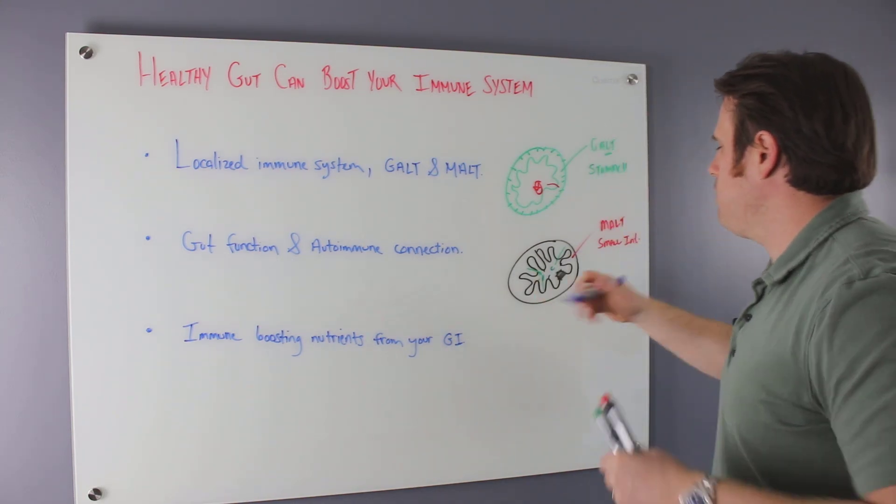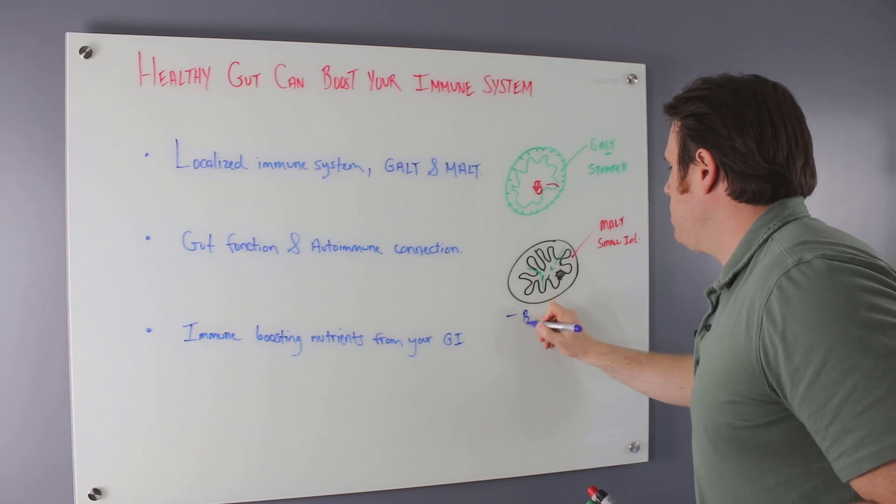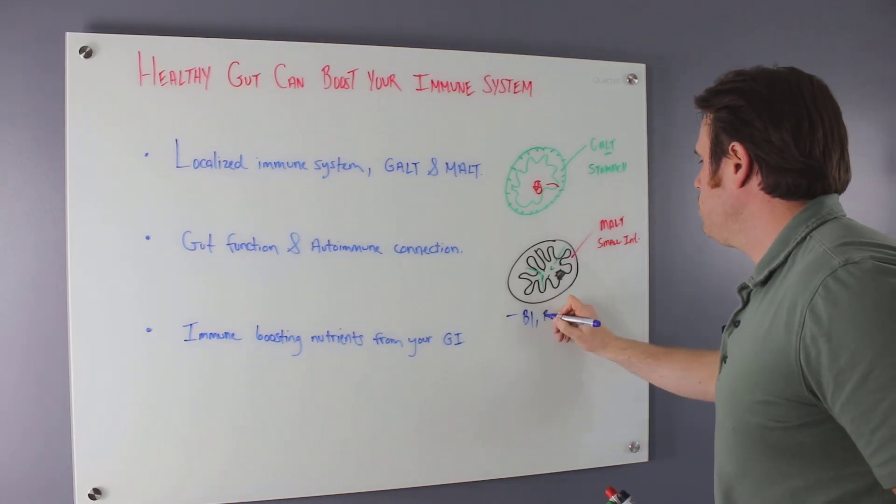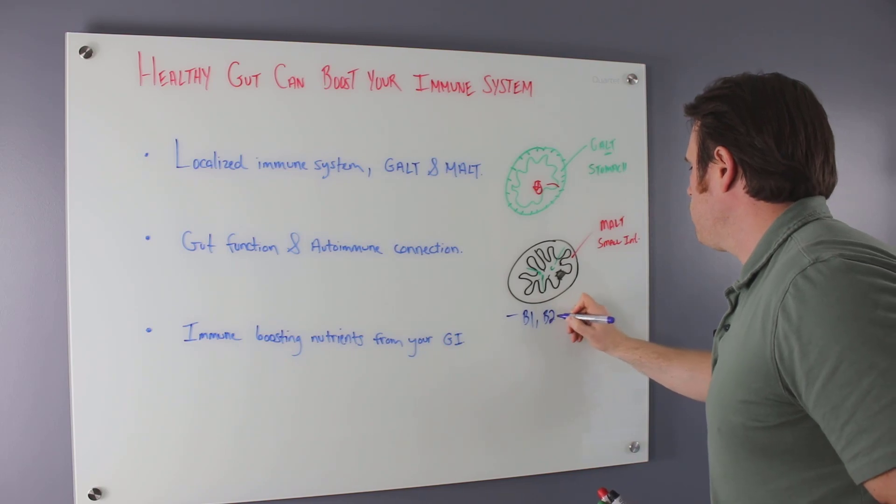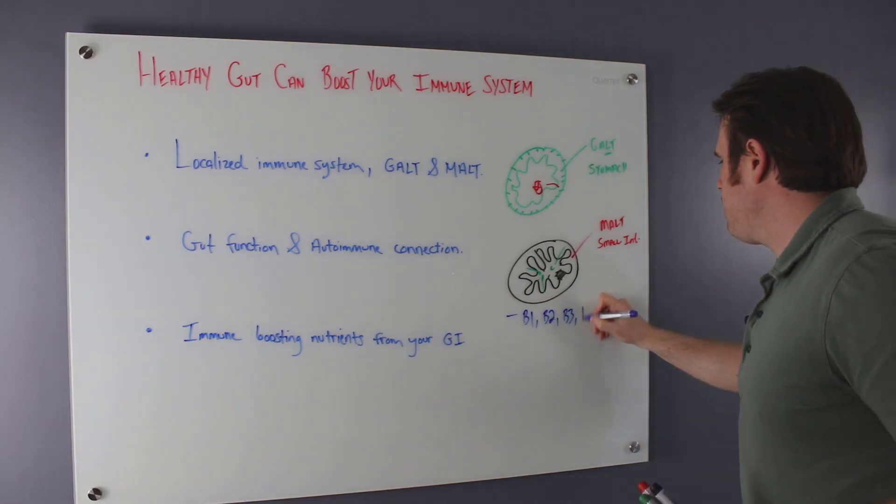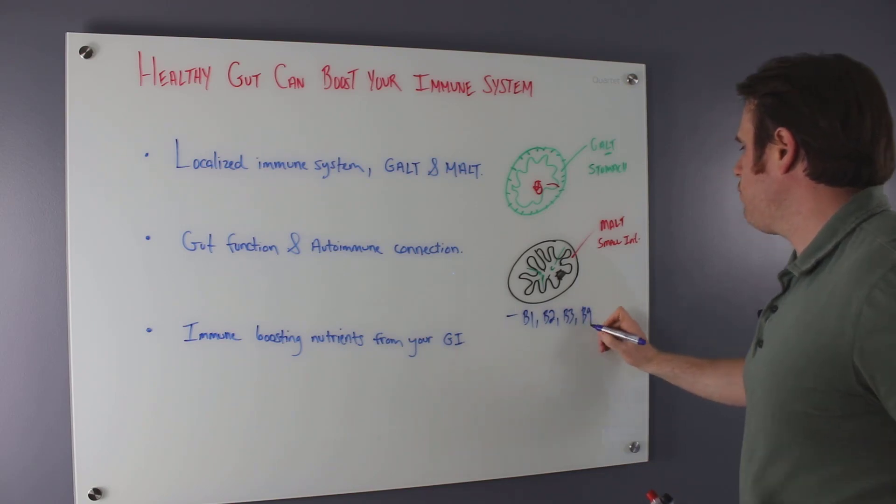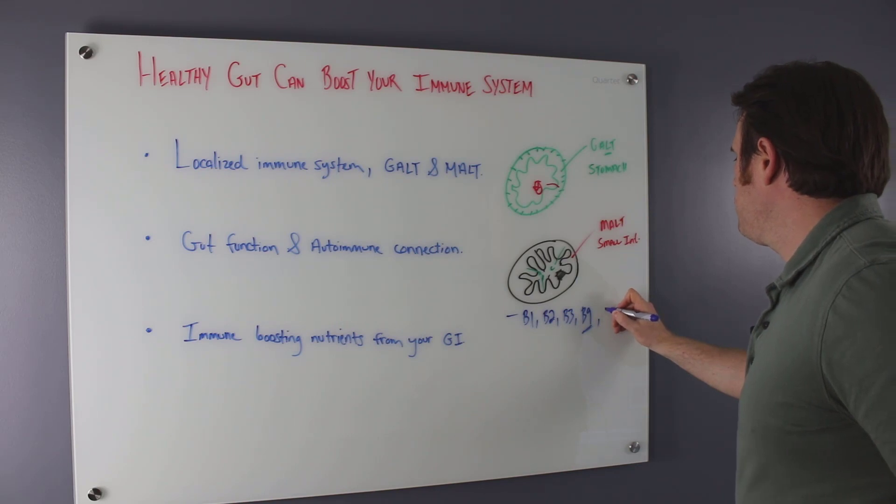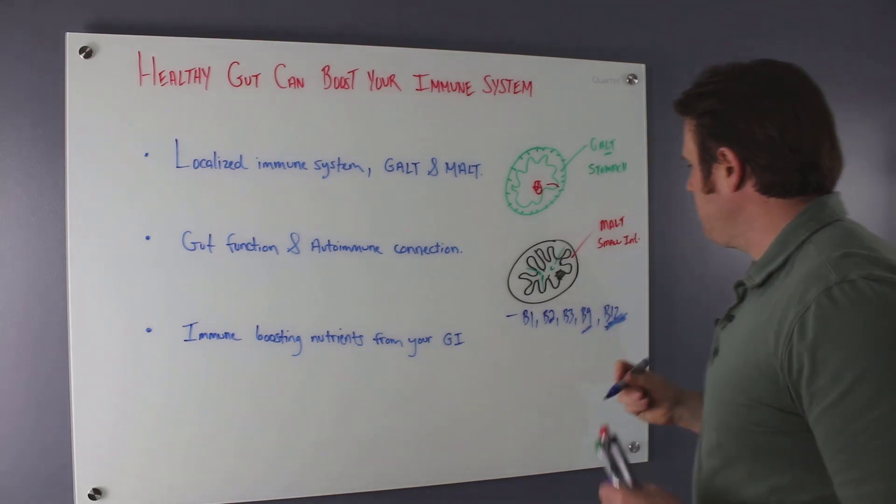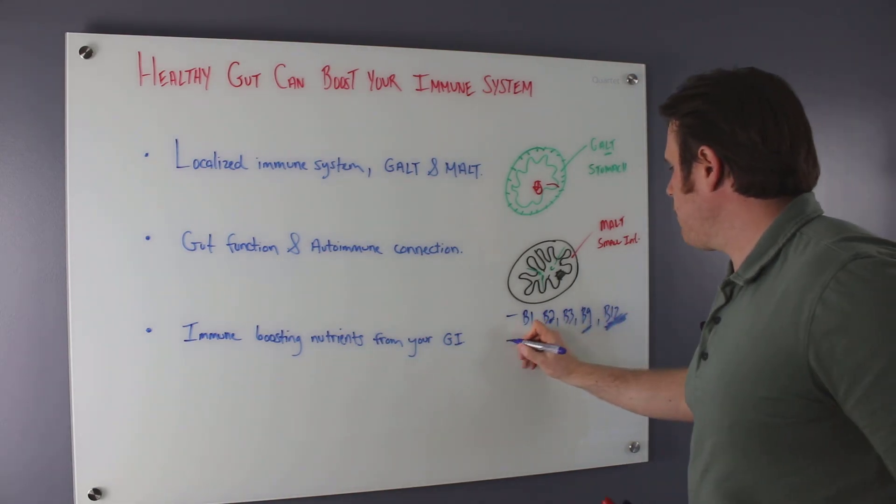We have B1, which is going to be thiamine. We have B2, which is going to be riboflavin. We have B3, which is going to be niacin. We have B9. That's folate, by the way. Folate's really important. And then also we have B12, methylmalonic methylated B12. So these are really important. We also are going to have good bacteria.